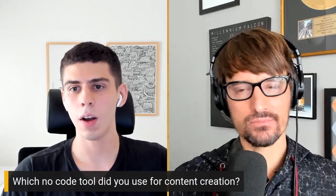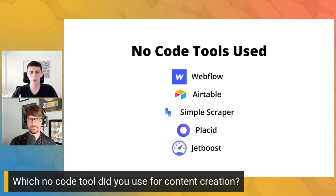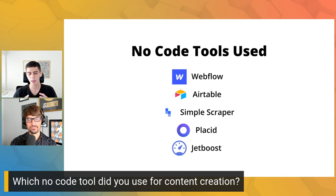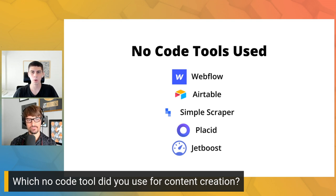Question: which no-code tool did you use for content creation? The content creation was made from the data we had in our Airtable — the whole article layout had empty spaces that were filled with information for each startup and pitch deck. We didn't really need to do any content writing besides rewriting the startup descriptions. For that we used Quillbot, an AI writing tool. And we used another AI writing tool called Copy AI for the blog introductions.